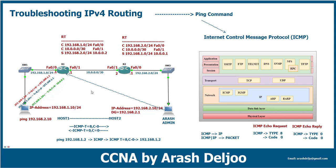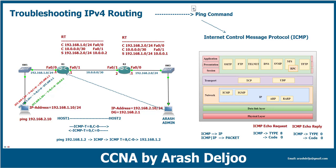By default, when you use the ping command, the source IP is the IP address of the outgoing interface — shown here as the blue ICMP echo request. To send an ICMP echo request with a different source IP than the outgoing interface, we use the extended ping command.